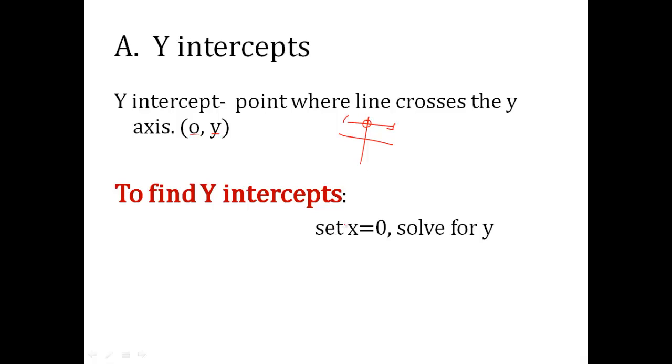Okay, now to find y-intercepts of rational functions, you're going to set x equal to 0 in the whole equation and just solve it for y. We'll do some examples in a minute, but here's the basic rule for y-intercepts: set x equal to 0, solve it for y.